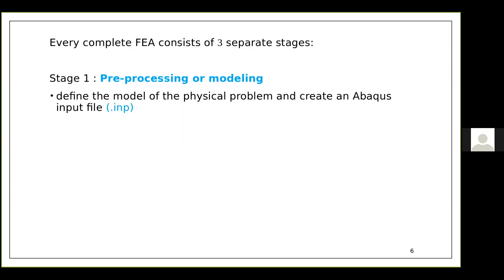In ABAQUS, once you create your model, ABAQUS generates a file with the extension .INP — the input file. This input file contains the information of your entire model: nodes, elements, material, boundary conditions — everything you have modeled. There are also other uses of this input file which will be discussed later.